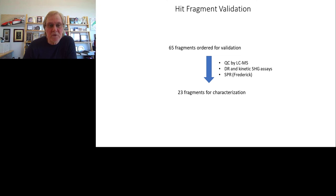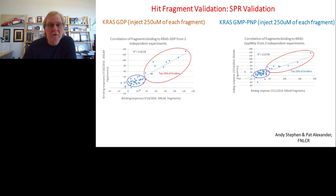We can run thousands of compounds in a few hours, going through libraries looking for the most effective binders, and then follow up with dose-response curves. Here we see compounds that bind to the RAS protein in the active GTP-bound configuration at two different concentrations, or in the GDP configuration. The distribution shows where most compounds fall with respect to standard deviation around the center of the plot on each graph.